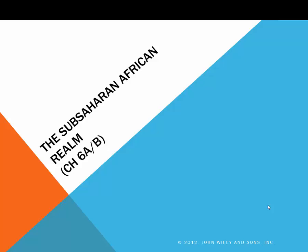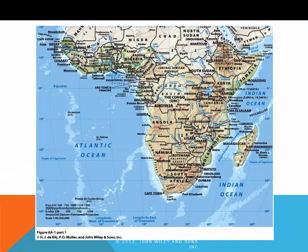Hi everyone and welcome to the lecture on Sub-Saharan Africa. We're going to split this one into two lectures because it's a bit long. So let us first take a look at the physiographic map. The African continent is divided into two geographic realms. We'll be looking at Sub-Saharan Africa first. This region, as its name suggests, lies directly south of the Sahara Desert.